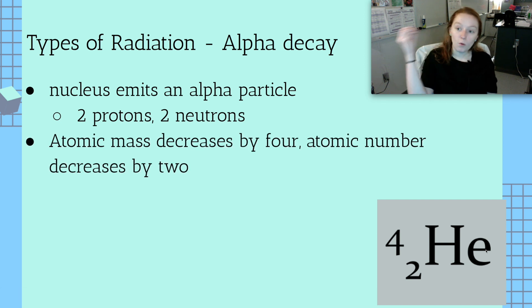Atomic mass is going to decrease by four total. Atomic number is going to decrease by two. It's gotten rid of two protons, so it's going to move back two spaces on the periodic table, and it's gotten rid of four total particles, so its mass is going to go down by four.